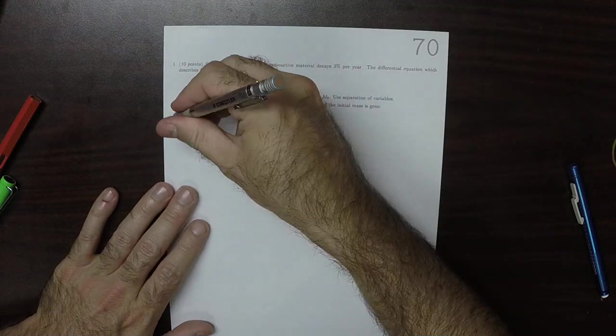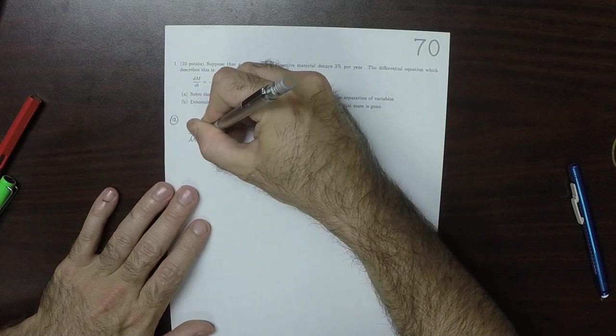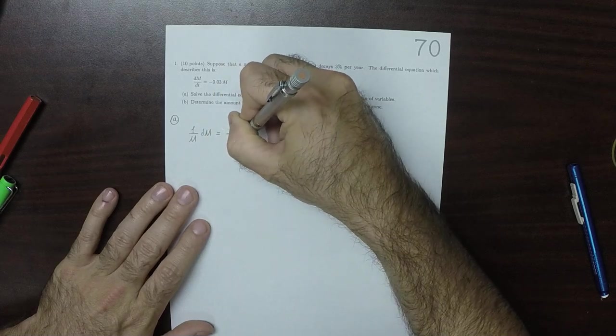We're supposed to solve this by separation. Separating the variables, we get 1 over m dm is negative 0.03 dT.